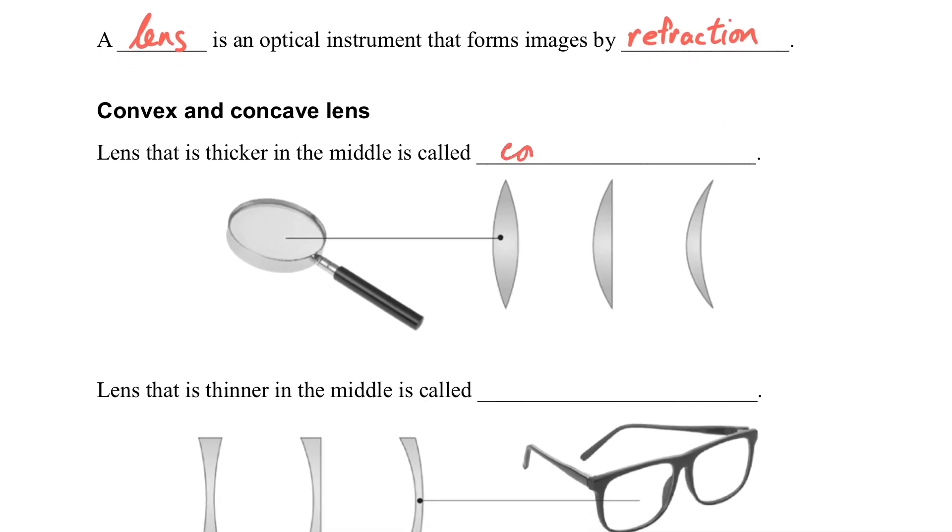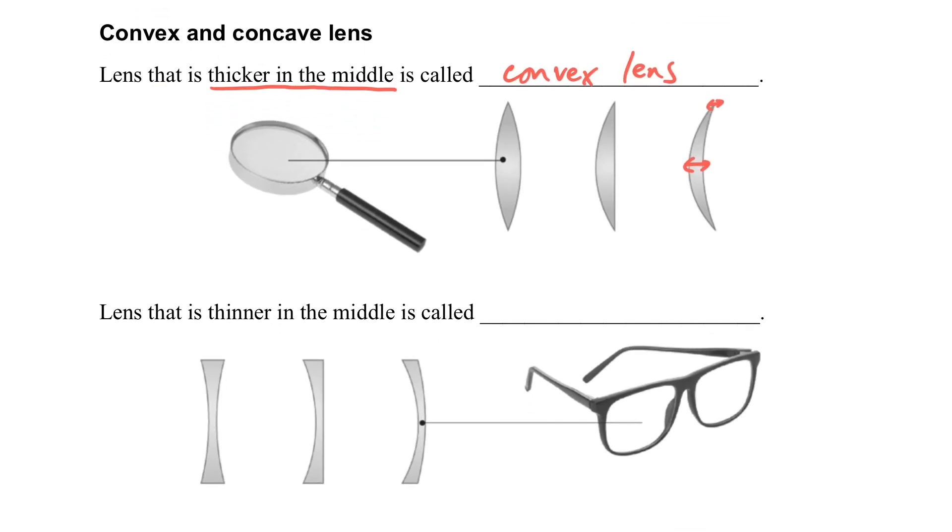Mainly there are two types of lens. First is the convex lens. Convex lens, the center is thicker in the middle. So you can see the three figures. This one is a convex lens.